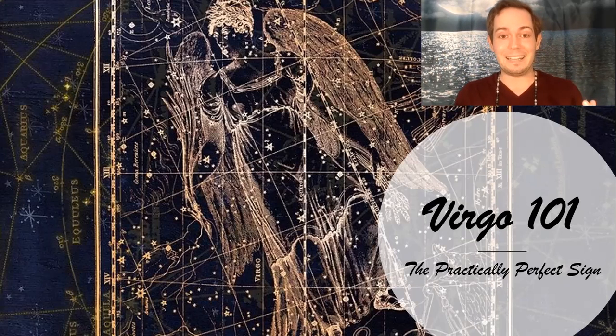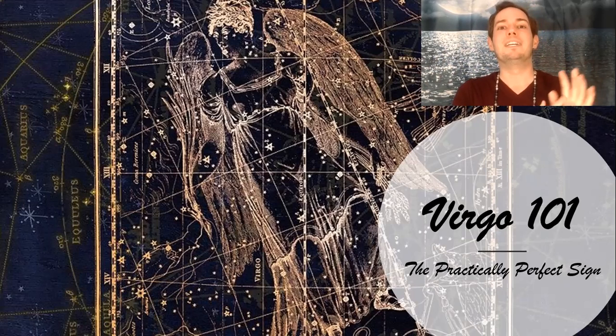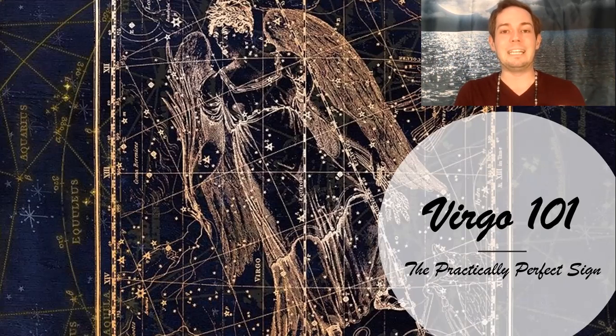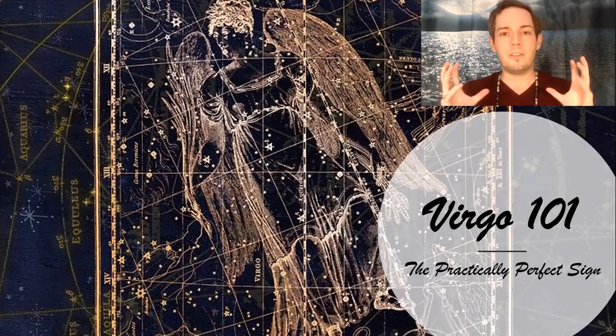I always think of Virgo as the practically perfect sign because the ability to be practical is Virgo. Virgo is about doing things that are practical, doing them the right way the first time, doing them efficiently. But also, Virgo strives towards perfection. It is a perfectionist sign. That is also what gets it in trouble.